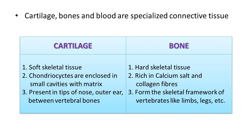Other specialized connective tissues are cartilage, bone, and blood. Comparing cartilage and bone: cartilage is soft skeletal tissue, but bone is hard skeletal tissue. In cartilage, chondrocytes are enclosed in small cavities within the matrix. Bone is rich in calcium salts and collagen fibers.